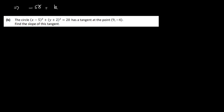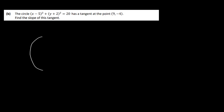Let's have a look at part B. The circle (x minus 5) squared plus (y plus 2) squared equals 20 has a tangent at the point (9, -4). Find the slope of this tangent. There are a couple of ways of doing this. The center of the circle is (5, -2) — you just change the signs. We have a tangent coming down and hitting the circle at (9, -4).